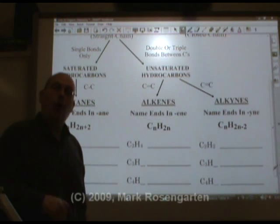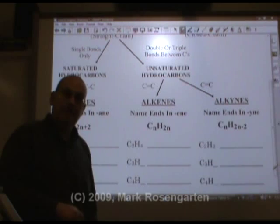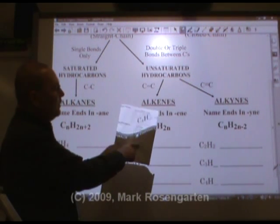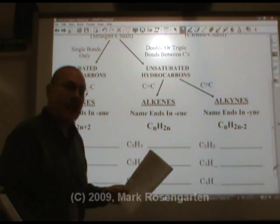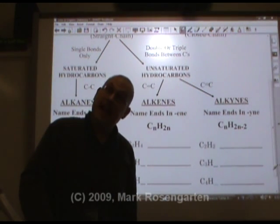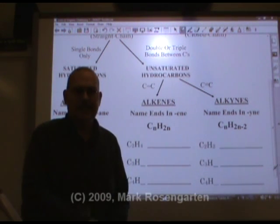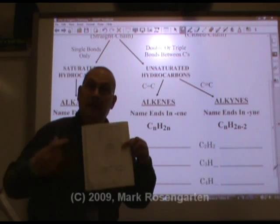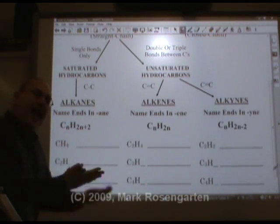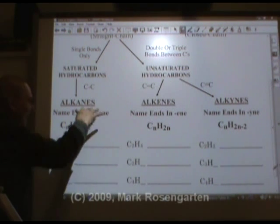To name an alkane, all you need to do is look at the number of carbons in the alkane molecule, and that gets a prefix. One carbon is meth-, two is eth-, three is prop-, four is but-, five is pent-, six is hex-, seven is hept-, eight is oct-, nine is non-, and ten is dec-. Then you add -ane on the end.